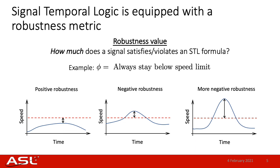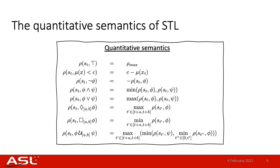For the other two speed profiles on the right, they both exceed the speed limit, so they will both have a negative robustness value. However, the speed profile on the right violates the speed limit even more, and so it will have a larger negative robustness value than the speed profile in the middle. What you see on the slide are the quantitative semantics of STL, which provides a systematic way to compute the robustness value of any STL specification. Here, rho denotes the robustness value, and it is a function of both the signal starting at time t and the STL specification of interest.